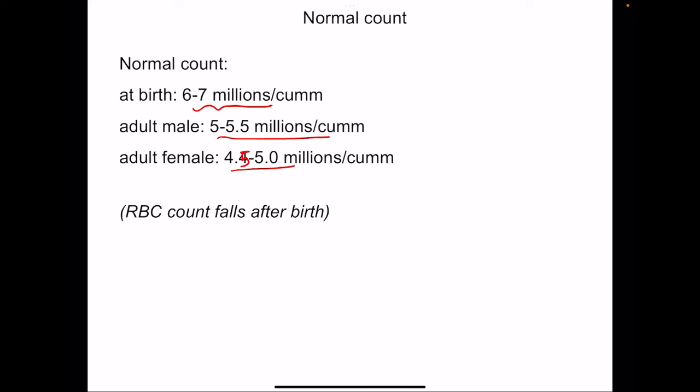The RBC count in adult males is more compared to females because of the reproductive hormone testosterone, which stimulates erythropoiesis and also causes release of erythropoietin. On the other hand, the female hormone estrogen inhibits erythropoiesis, which is why the RBC count is less in females compared to males.